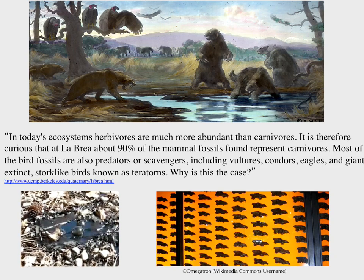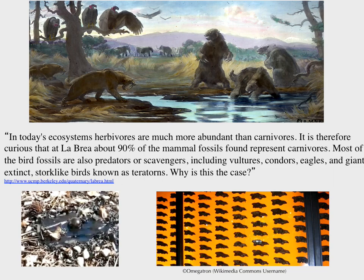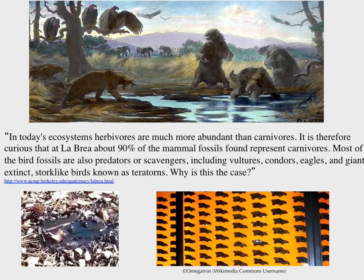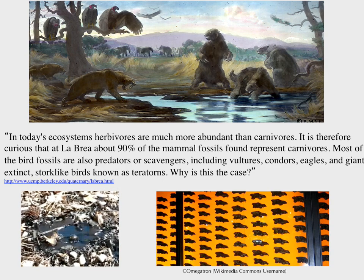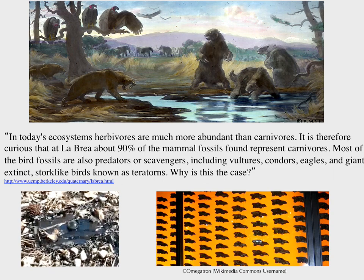Here we have La Brea Tar Pits. If you go to downtown L.A., there's a museum with tar bubbling out front, and inside they have entire walls of wolf skulls. About 90% of the fossils found there are carnivores — wolves, eagles, vultures, condors — and also some herbivores like ground sloths. Does that mean they had an inverted trophic pyramid there?